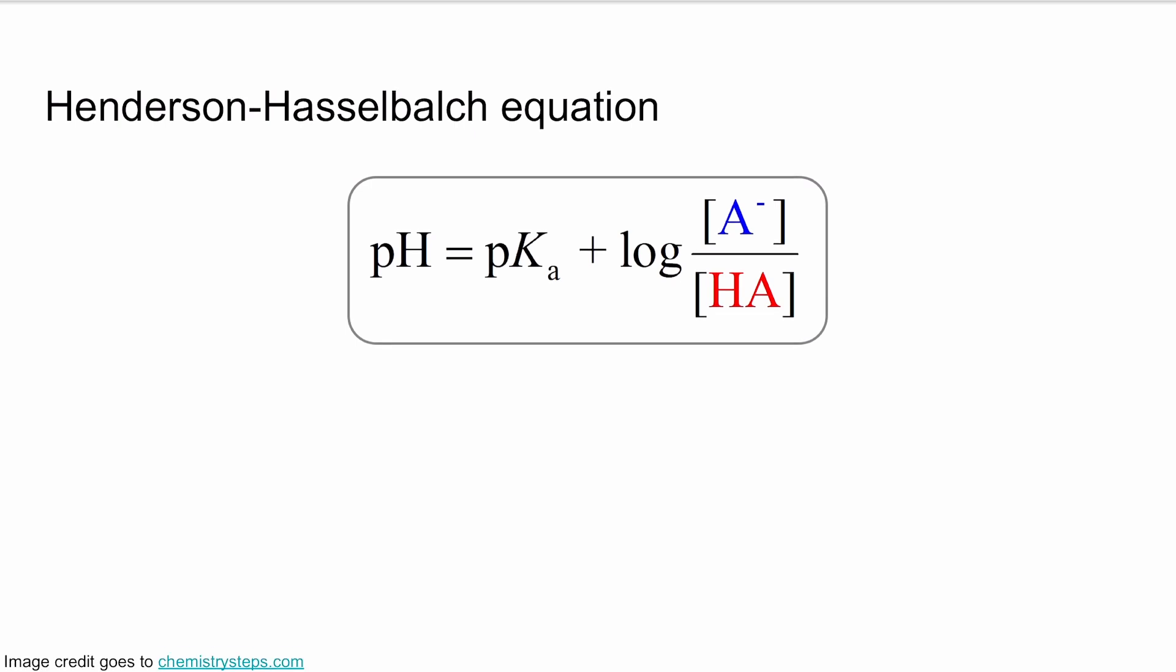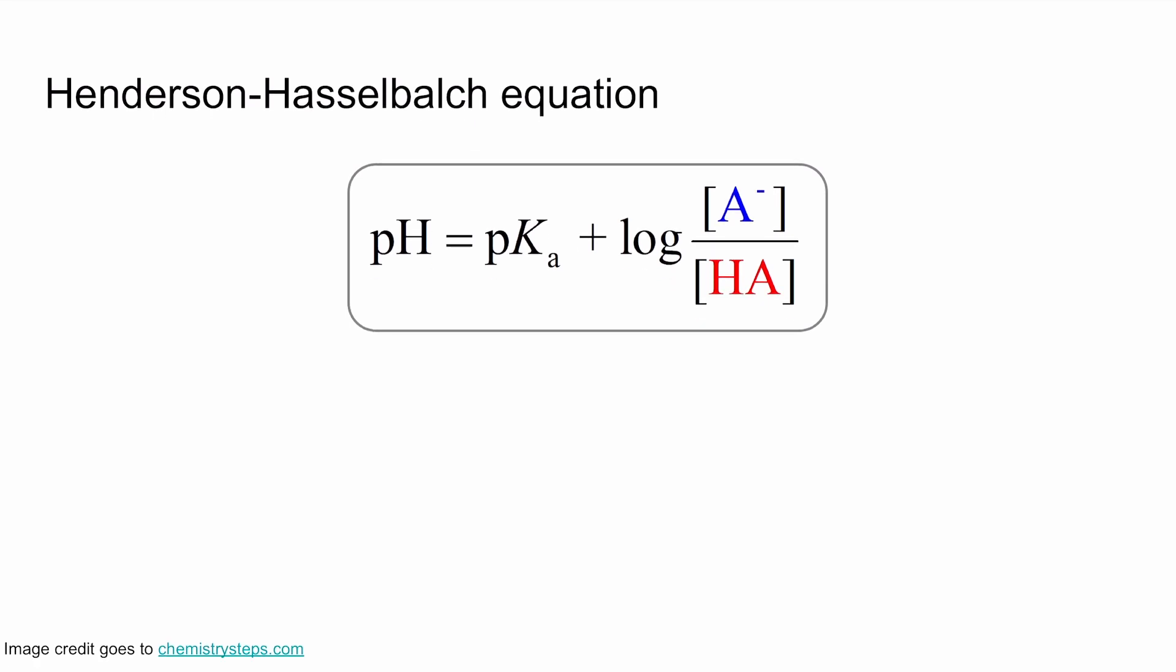So this equation is super useful for pH and pKa relationships. It basically says that pH is going to be equal to a functional group's pKa plus the log of the concentration of acid over concentration of base. Let's go through each part.